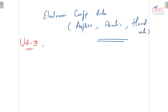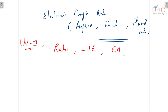In unit 3, we are having radii — whether atomic radii or ionic radii — we have ionization energy, we have electron affinity, and then we have electronegativity. The examiner can ask about any one of these.